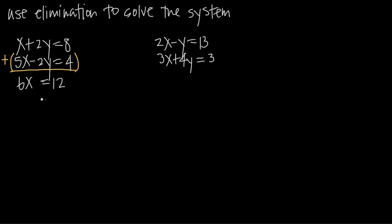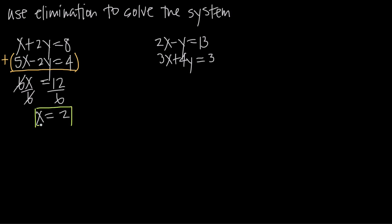Now we can solve for x. We have 6x equals 12. We divide both sides of the equation by 6 so that the 6 cancels from the numerator and denominator. We're left with x on the left, and we get x equals 12 over 6, or 12 divided by 6 is 2. So now we have the solution x equals 2, and we need to use that to find a value for y.